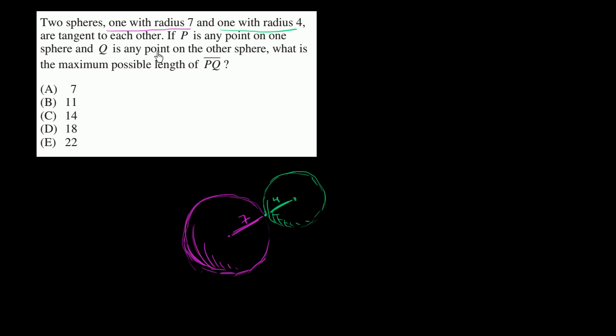Now, P is any point on one sphere and Q is any point on the other sphere. We want the maximum length of PQ. So we want to get these points P and Q as far away as possible from each other. If I was just dealing with two circles, I'd stick P right over here, all the way here.